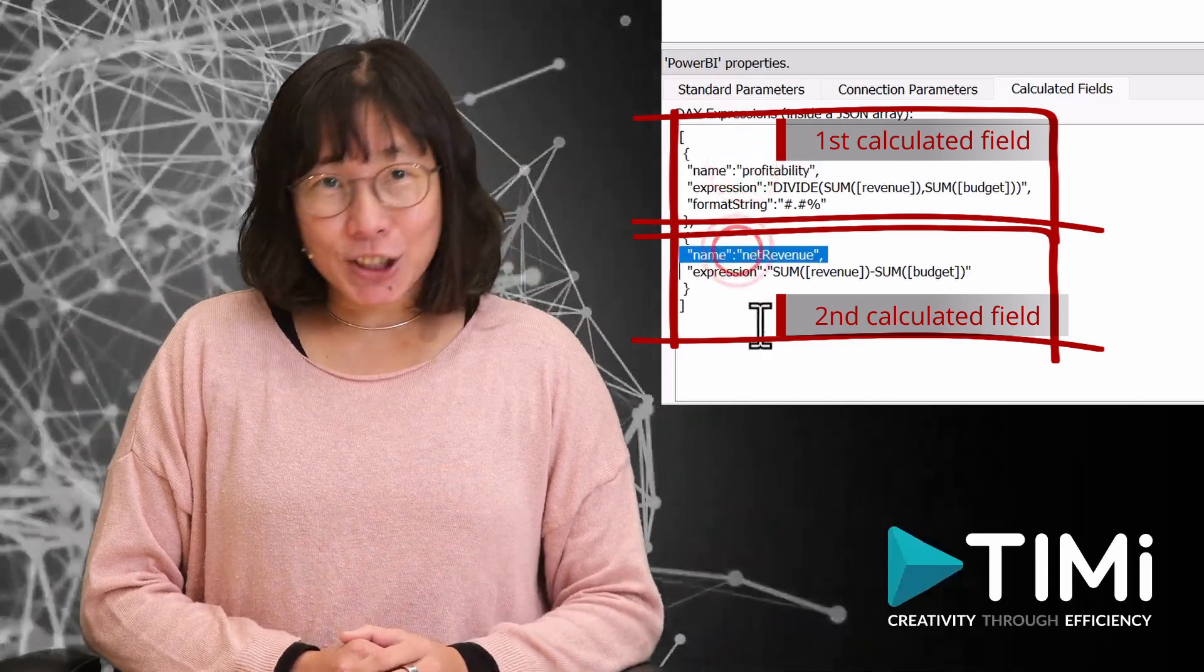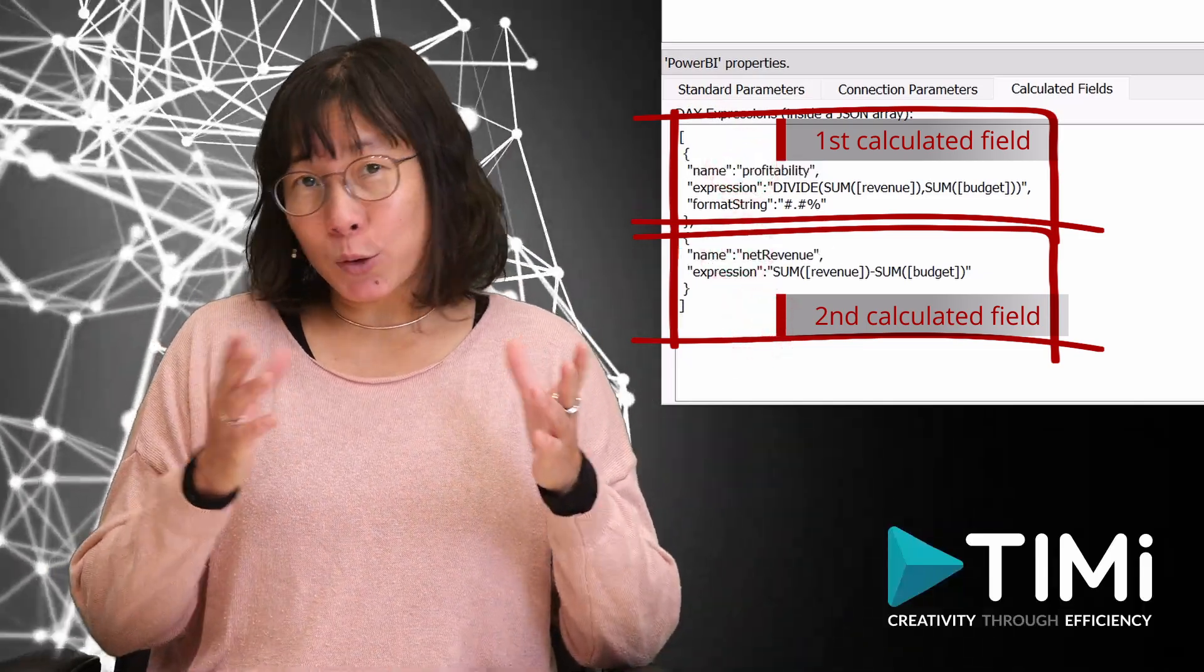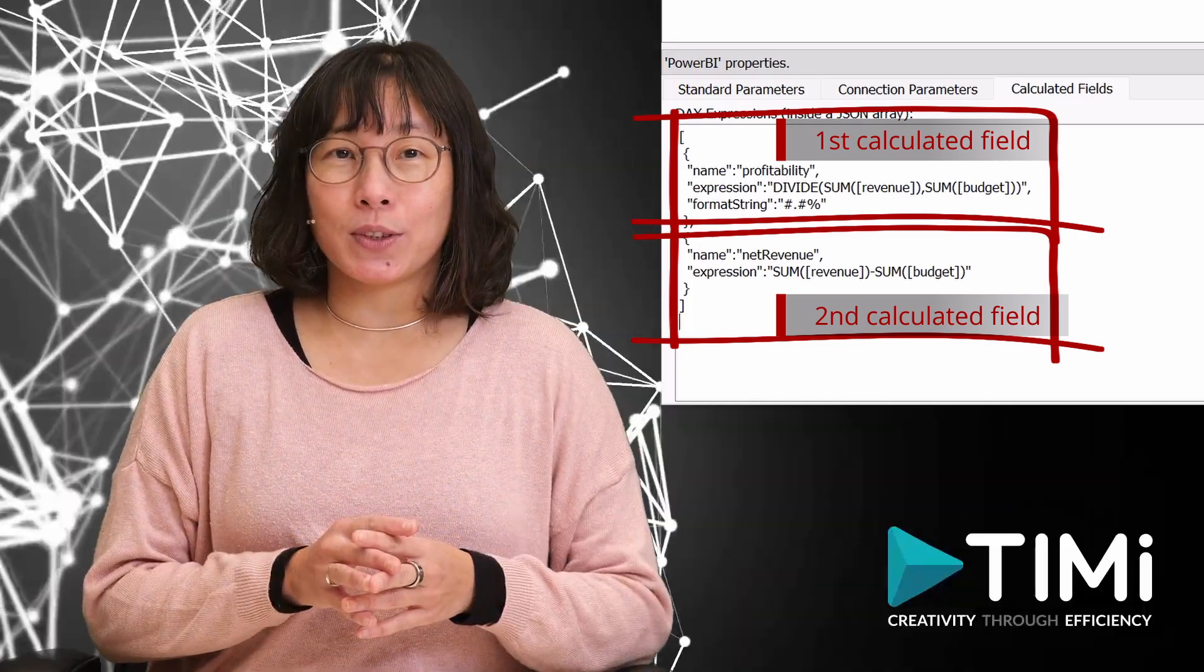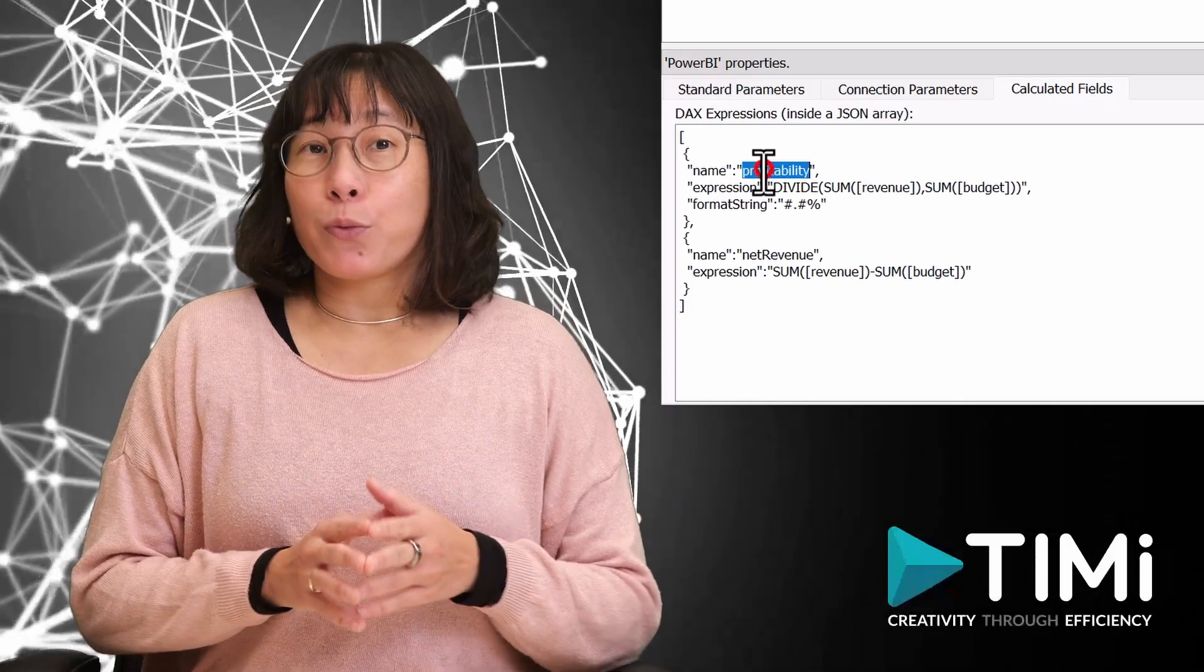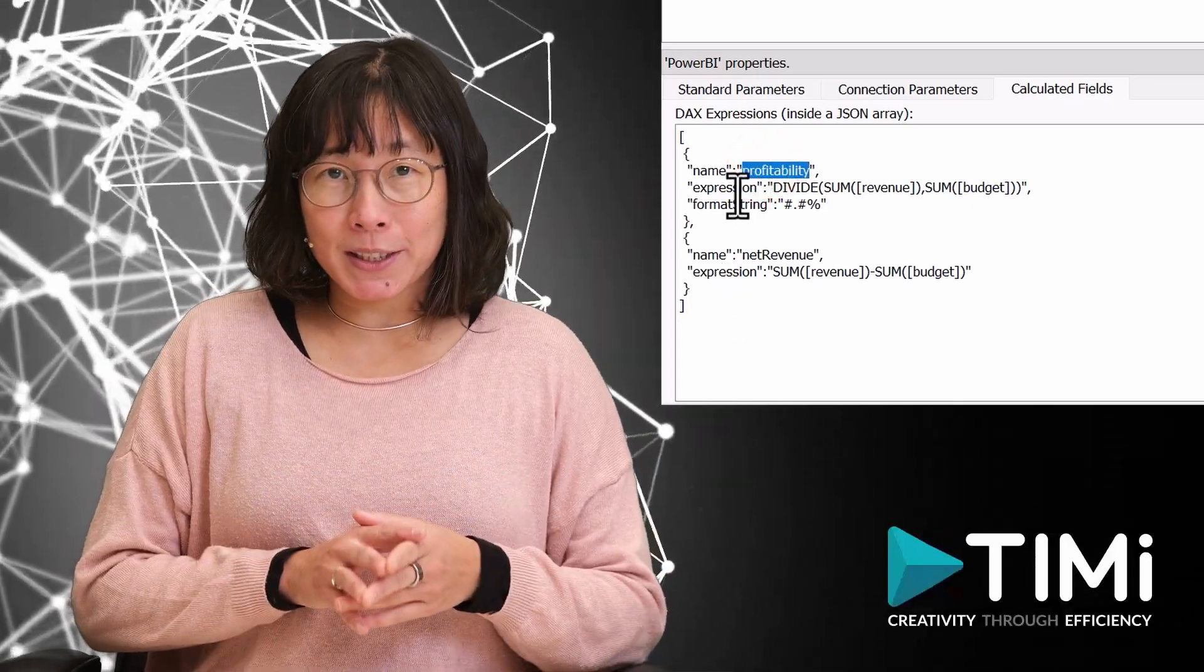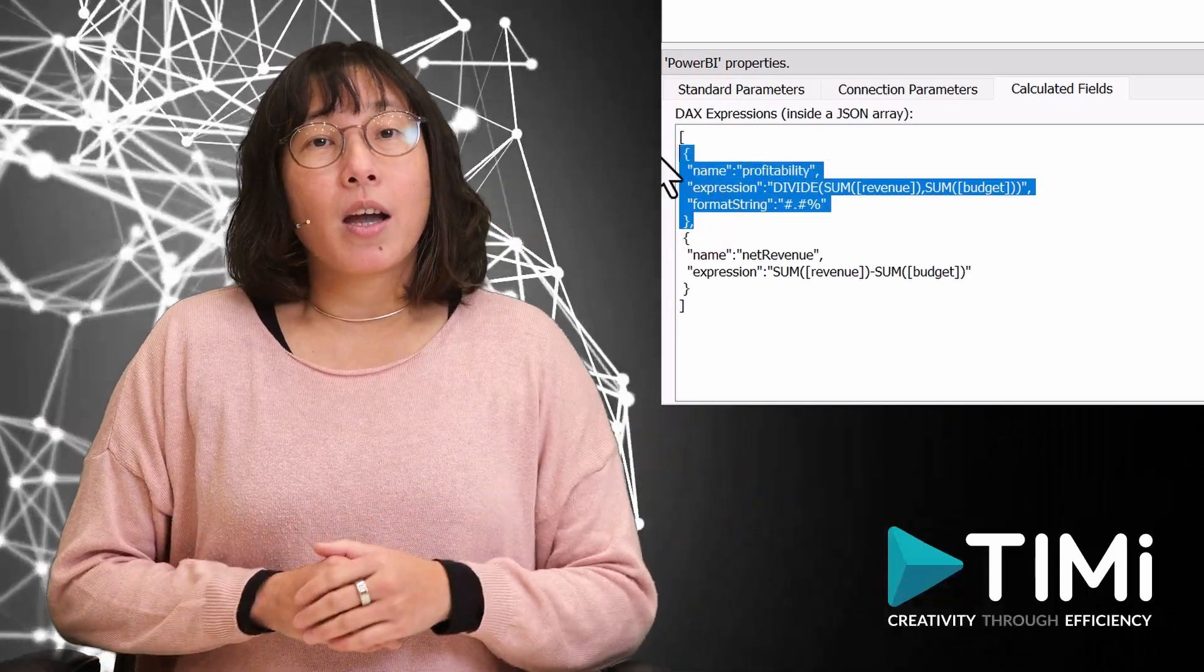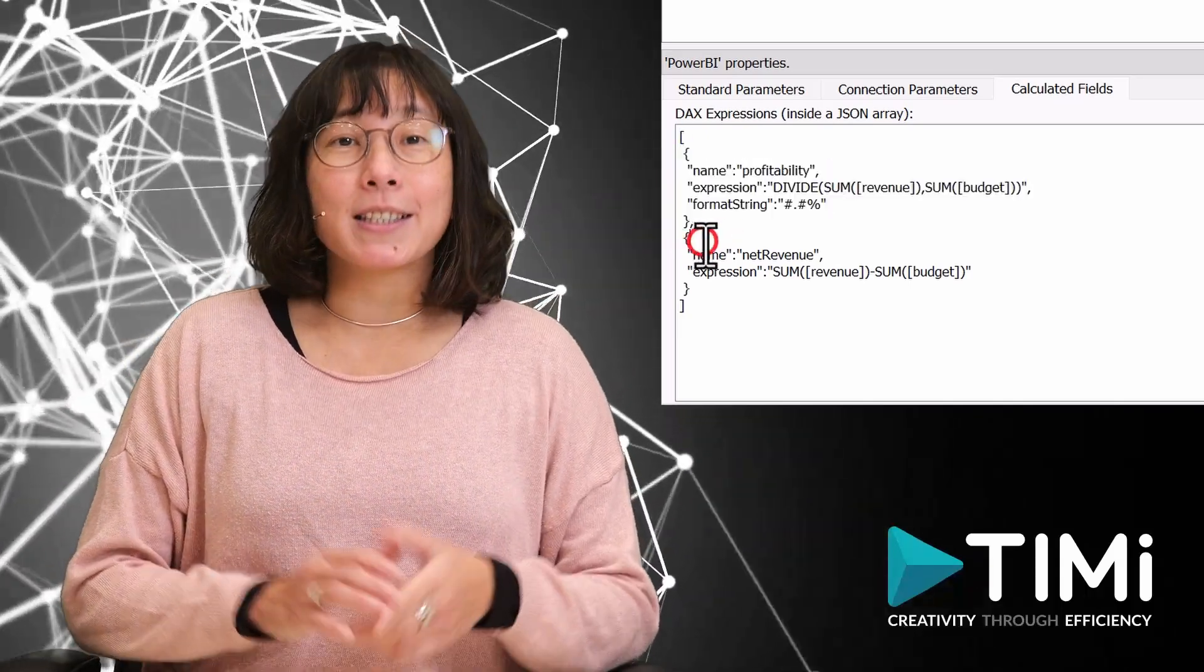This is actually composed of one single array that has two items inside. Each item is a dictionary that defines a new calculated field. Thus, we have here two calculated fields. The name of the first calculated field is profitability. And the second calculated field is net revenue.